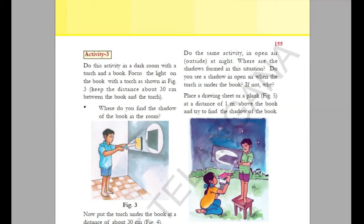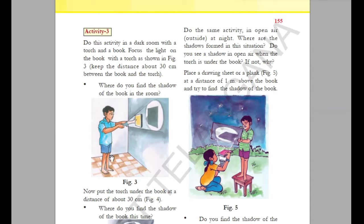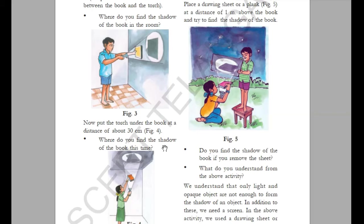We can see the shadow of an object on another surface. Here we have a source of light — a torch — and a book as an opaque object, with the shadow of the book formed on a surface. Whenever an object's shadow is formed on some other surface, that surface is called a screen. For example, in a cinema theater, the light from the projector forms an image on a screen. Similarly, in these pictures we can see the shadow of an object on another surface.